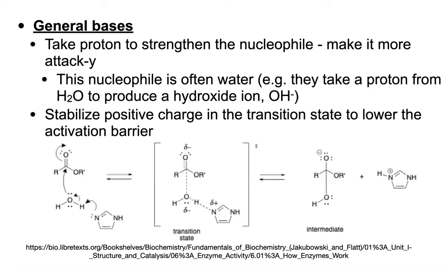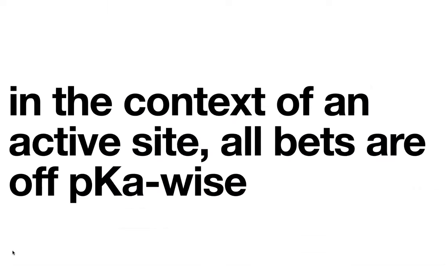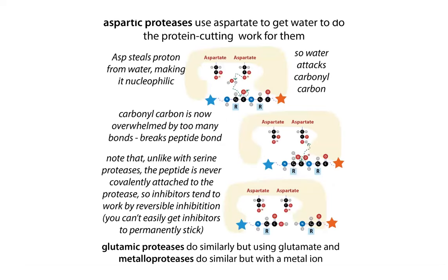Once an amino acid acts as a general base, it now has a proton and can act as a general acid. In order to get reset, it needs to act as a general acid and give up that proton. We'll look at a ping-pong mechanism commonly seen with histidines, where it goes back and forth between the acid and base form. But it's not just histidines — the pKa can be totally skewed in the active site, so we can see things like an aspartate playing a similar role.